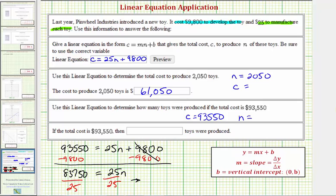And 83,750 divided by 25 is equal to 3,350. So this tells us that if the total cost was $93,550, then 3,350 toys were produced. I hope you found this helpful.